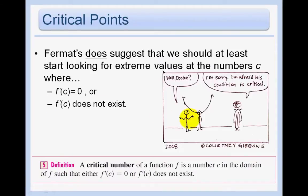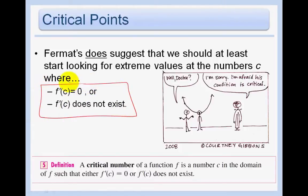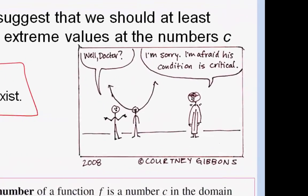Critical points are found by finding where f′(c) = 0 or where f′(c) does not exist. To find critical values, we must find either where the derivative is zero or where the derivative does not exist.